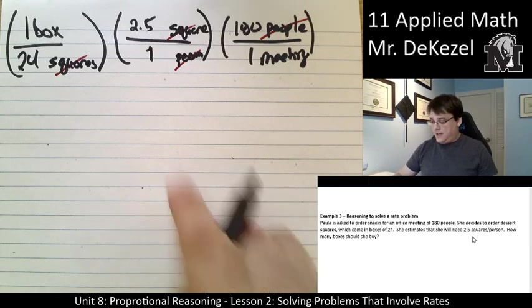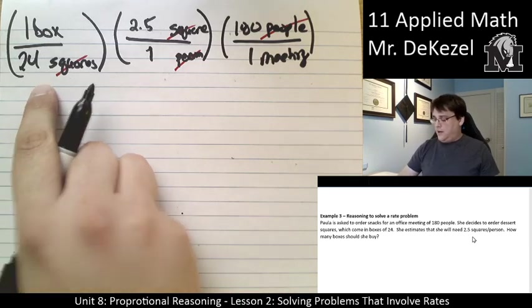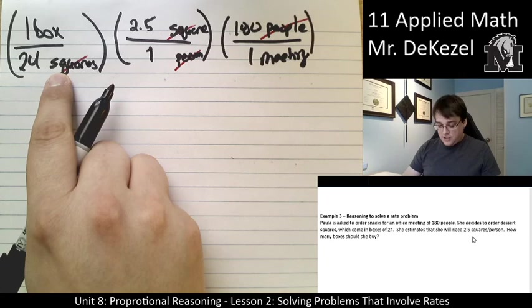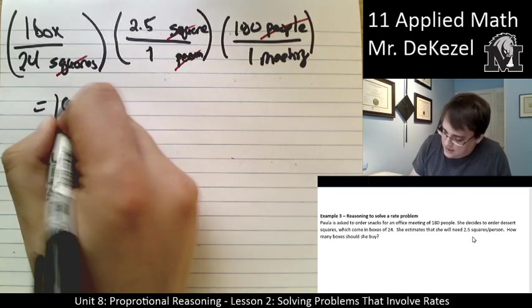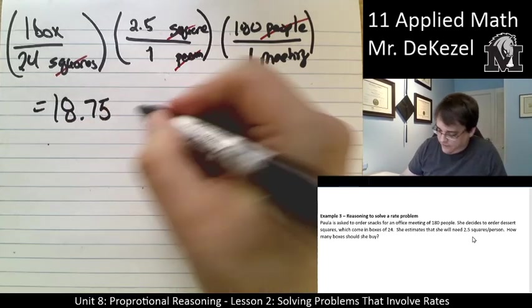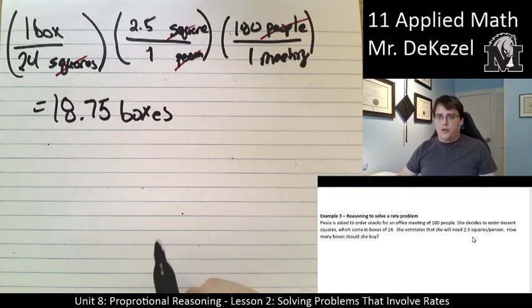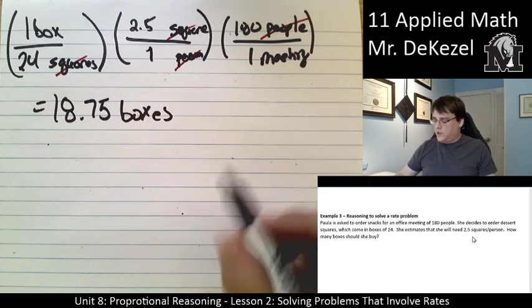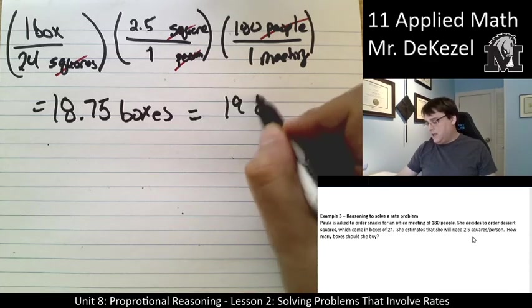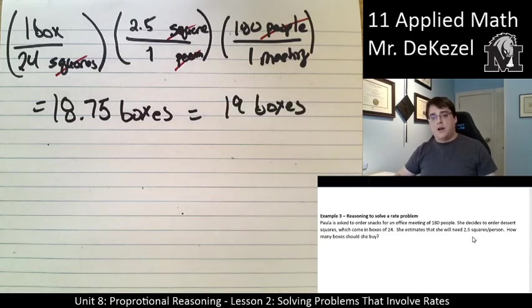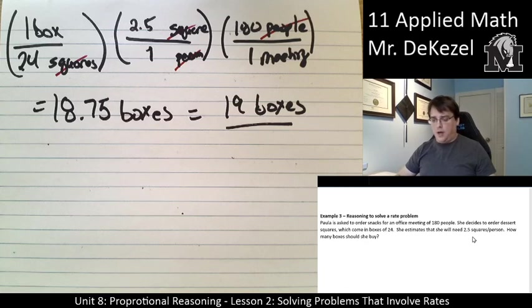So, let's do this math. I take 2.5 multiplied by 180 divided by 24. I get 18.75 boxes. I can't order that many boxes. I can't order three quarters of a box. That doesn't work. So, what we're going to say is we need 19 boxes. You'd probably be okay with 18. I can't see everyone in the 180 people eating two and a half squares of dessert. That's a hungry meeting. But, you know, that's what we'd end up with. 18 to 19 boxes.